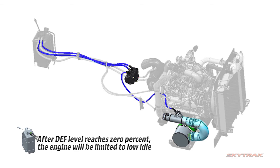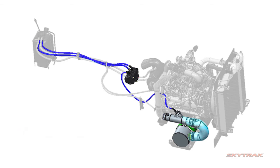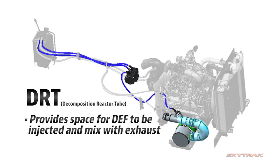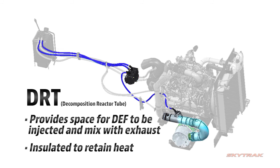After the DEF level reaches zero percent, the engine will be limited to low idle. The decomposition reactor tube (DRT), also called a mixing tube, and exhaust hardware are insulated to retain heat. Higher temperatures help prevent unwanted deposits generated from urea from accumulating within the tubing and catalyst.